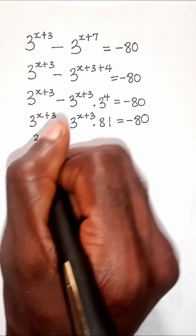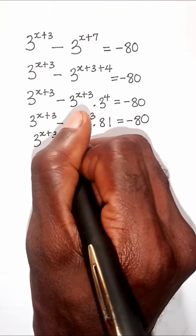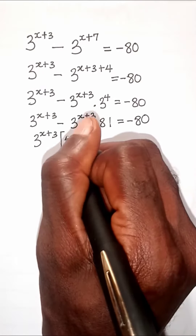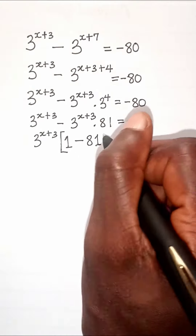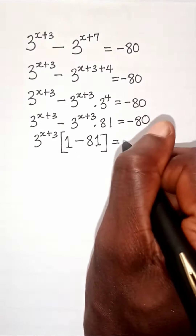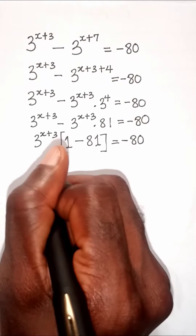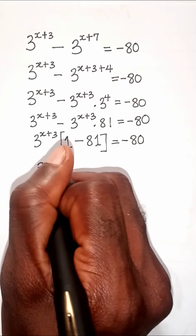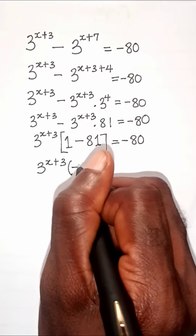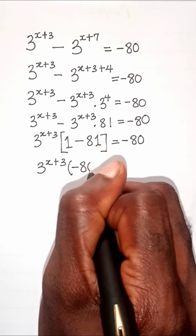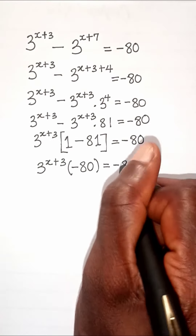Now we can factor out 3 to the power of x plus 3, as it is common to the two terms on the left-hand side of the equation. When we factor it out, we have 1 minus 81 in brackets, equal to negative 80. Now 1 minus 81 gives negative 80, so 3 raised to the power of x plus 3 times negative 80 equals negative 80.